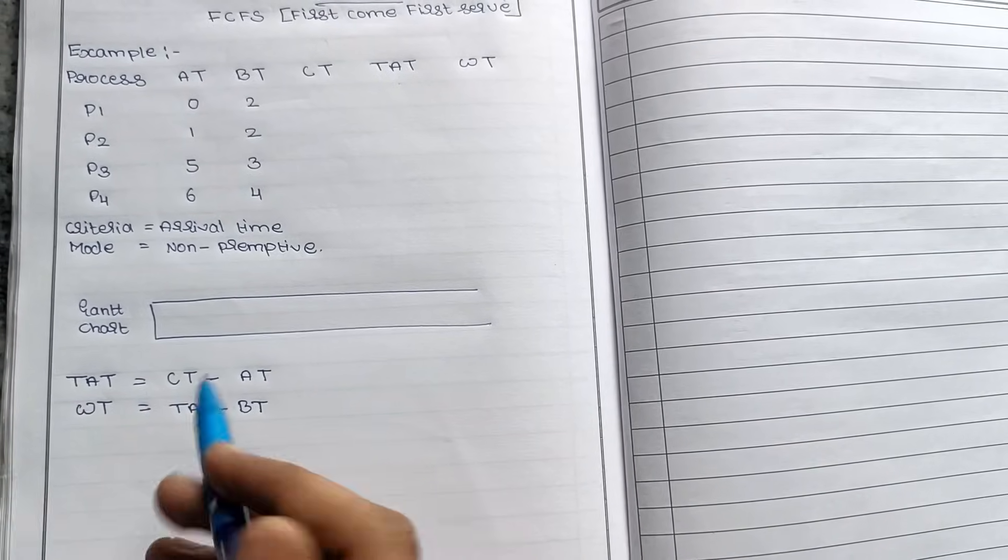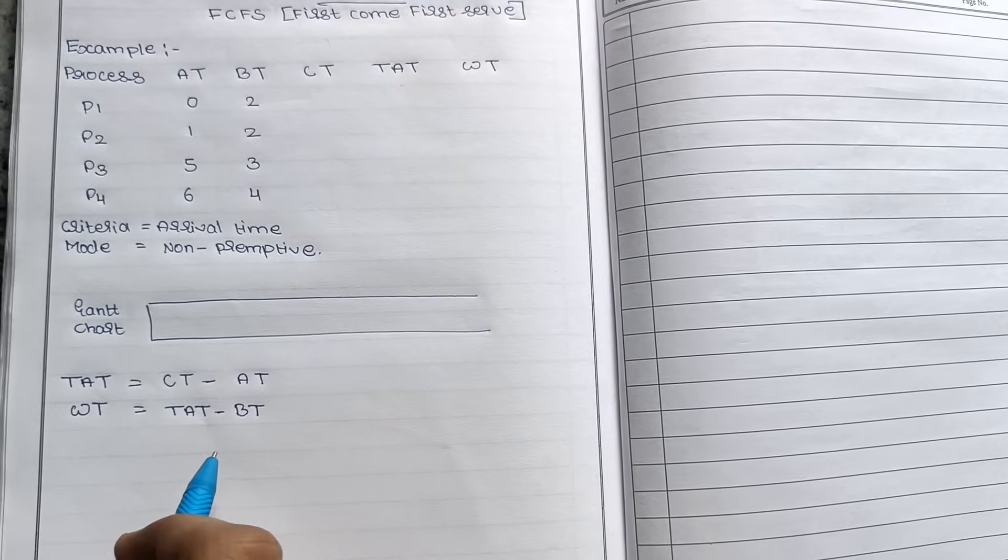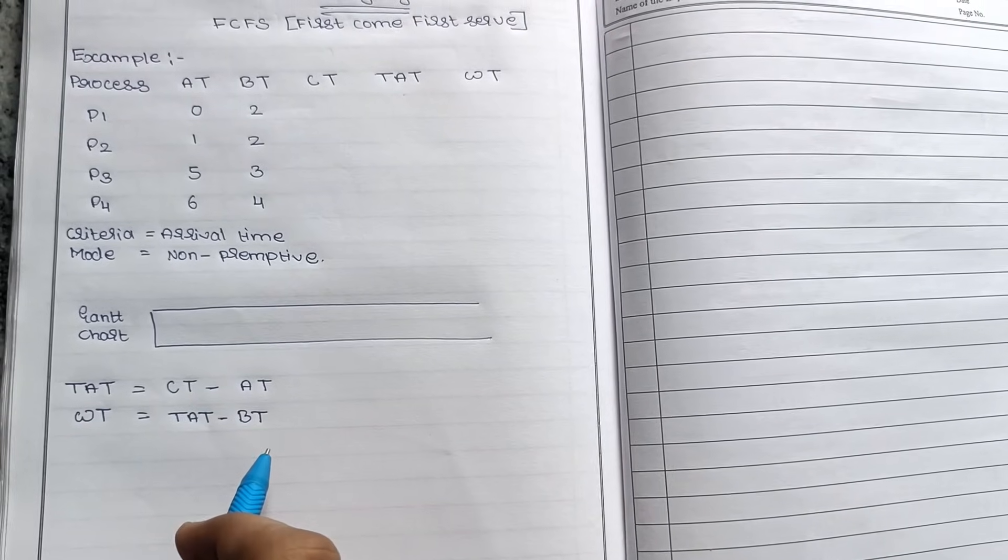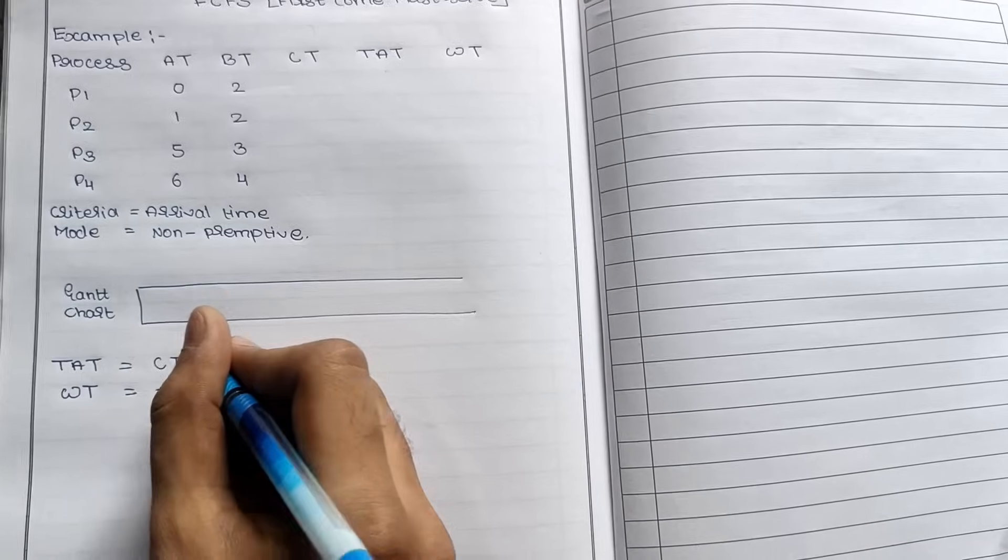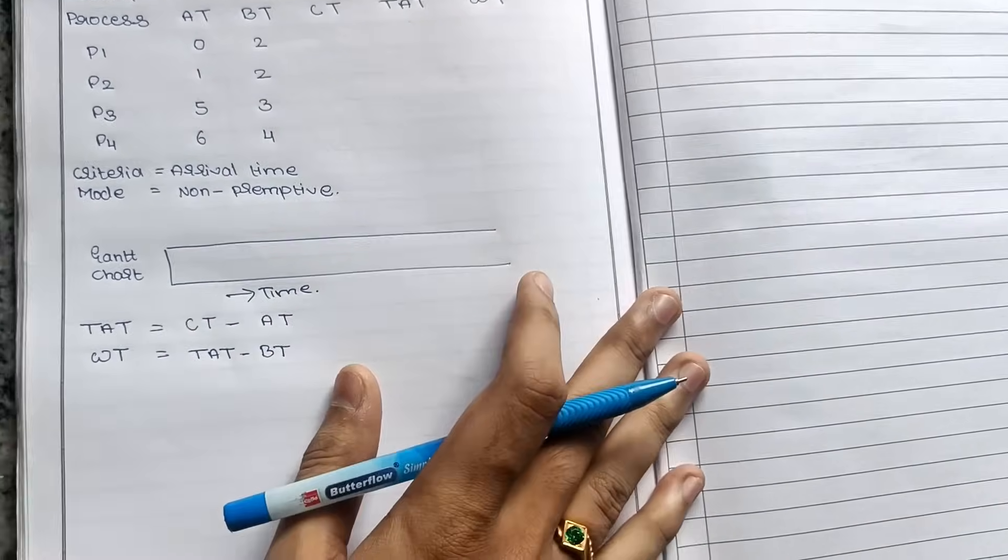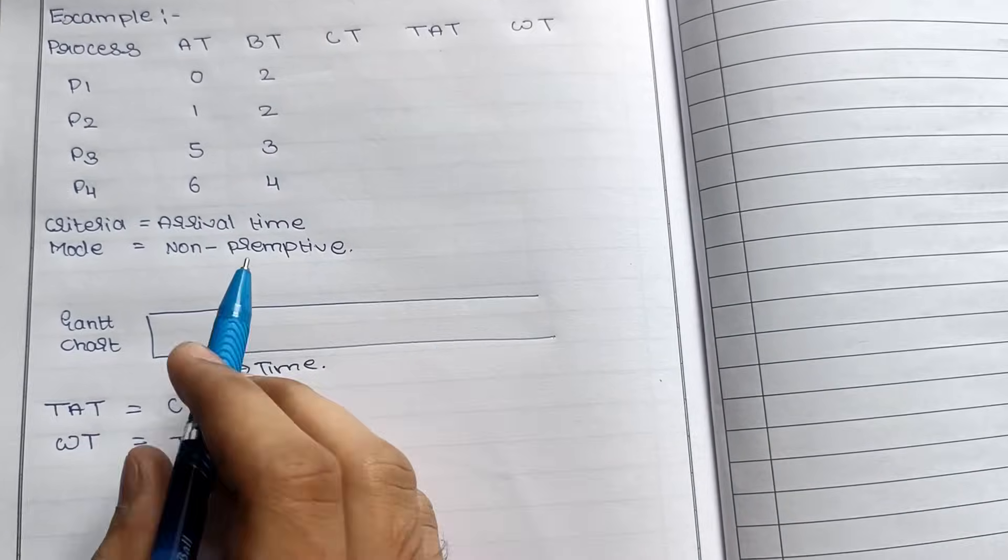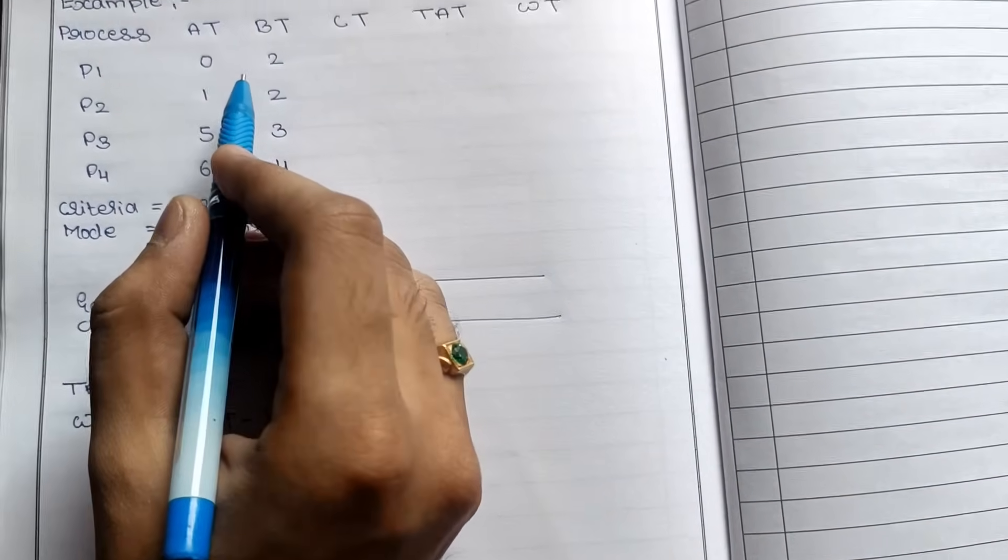As usual, we know the formula for turnaround time: completion time minus arrival time. Then waiting time equals turnaround time minus burst time. We will use the Gantt chart as the easiest representation. We will represent the process as a pictorial representation.